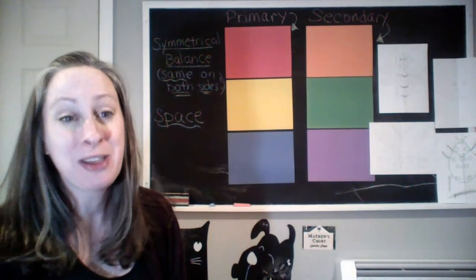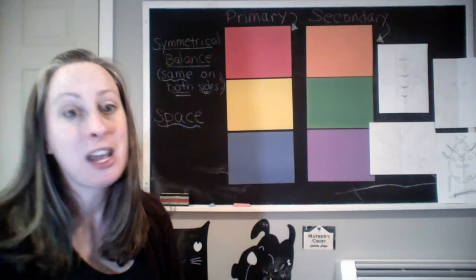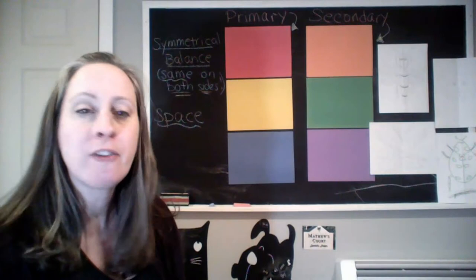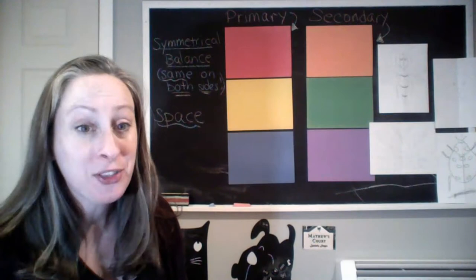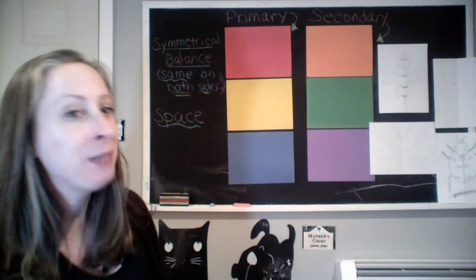That's the element we're going to spend most of our time discussing, specifically reviewing from kindergarten, first, and second grade — the primary colors and the secondary colors. The primary colors are red, yellow, and blue. Secondary colors are orange, green, and purple. The primary colors are colors that we can never make — those are the colors you have to buy at the store — and you can use them to make the secondary colors.